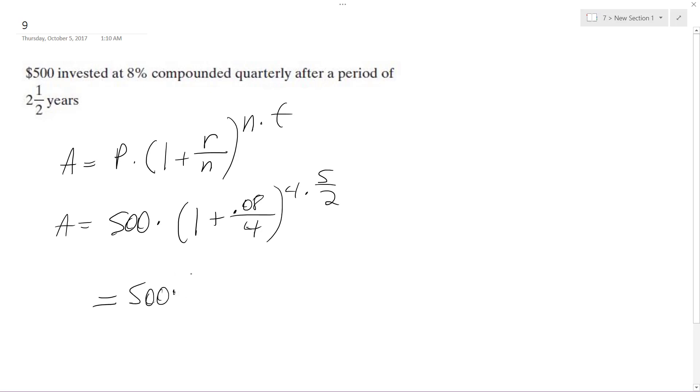So essentially, 500 times basically 1.008 raised to the, basically 10 is what we're looking at here, because number times quarterly, 4 times - oops, take that back, this should be 2.5 years.